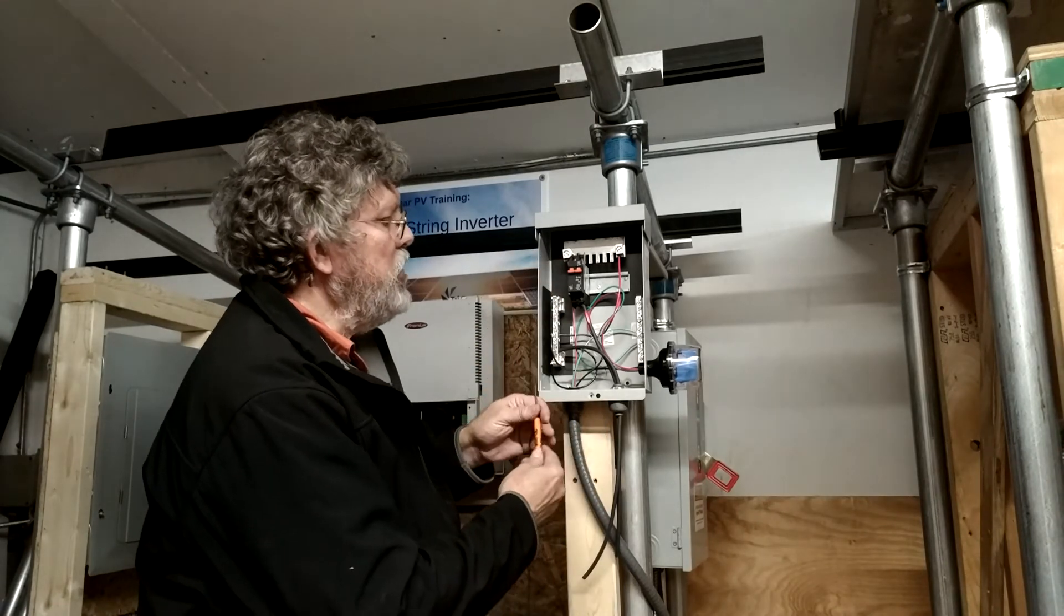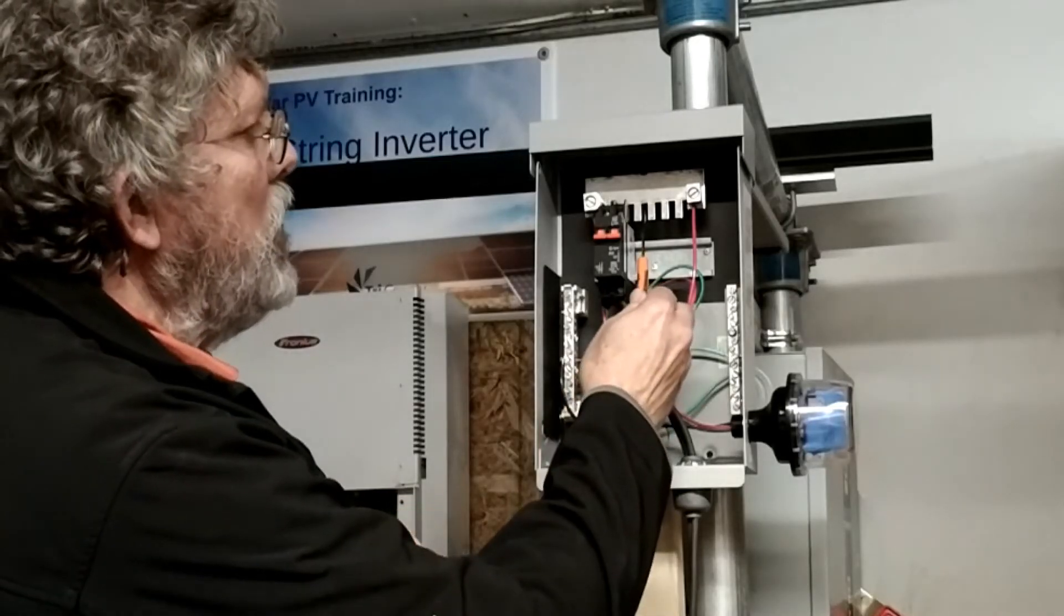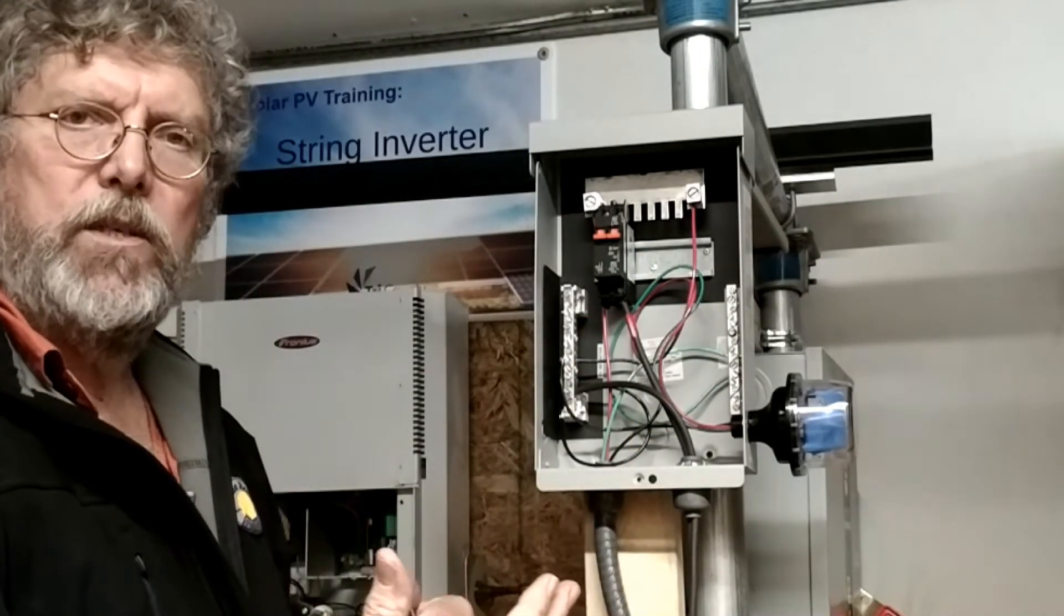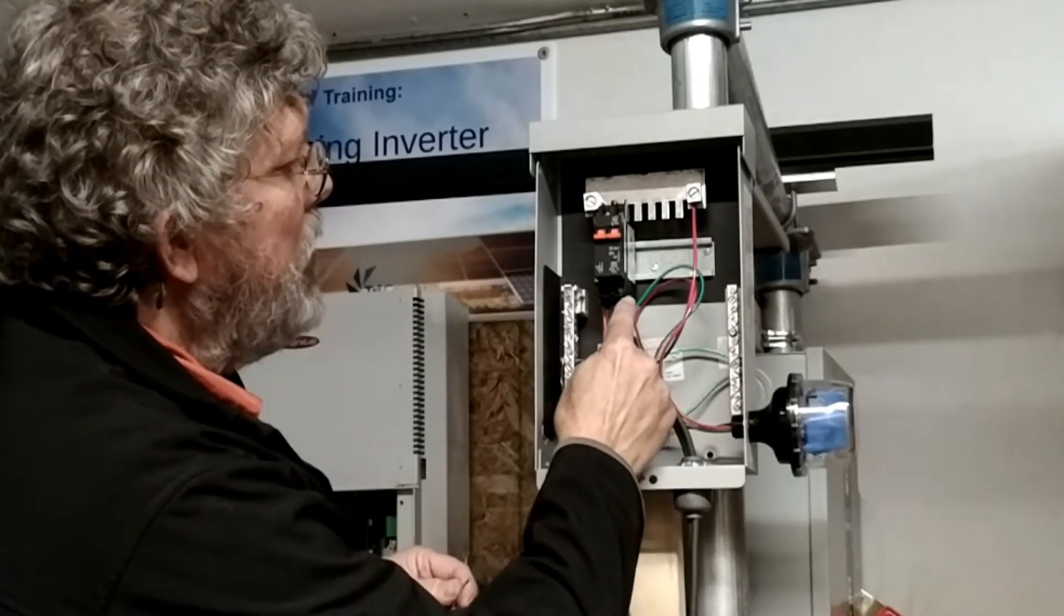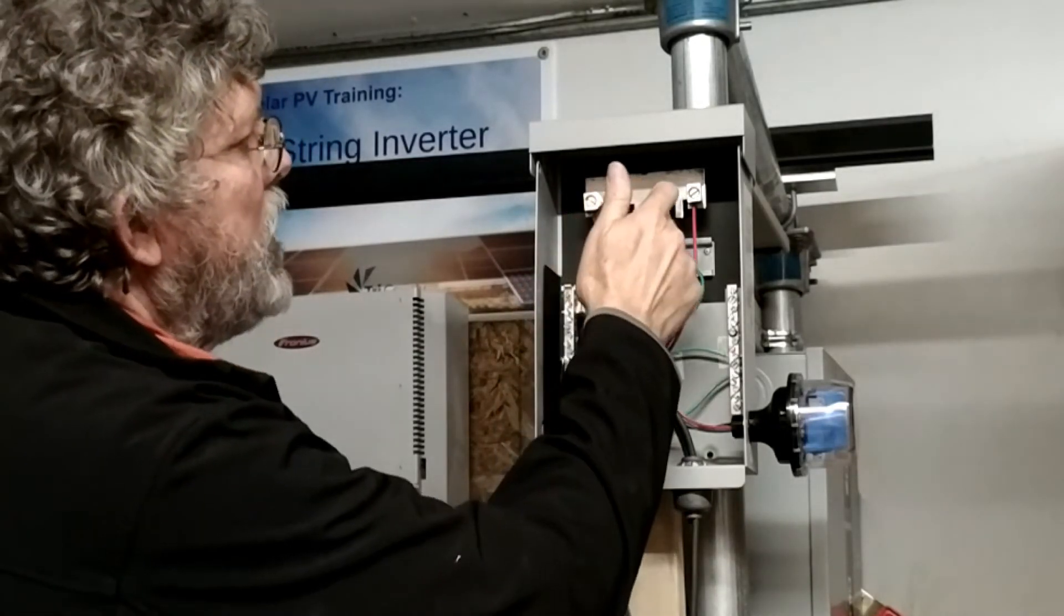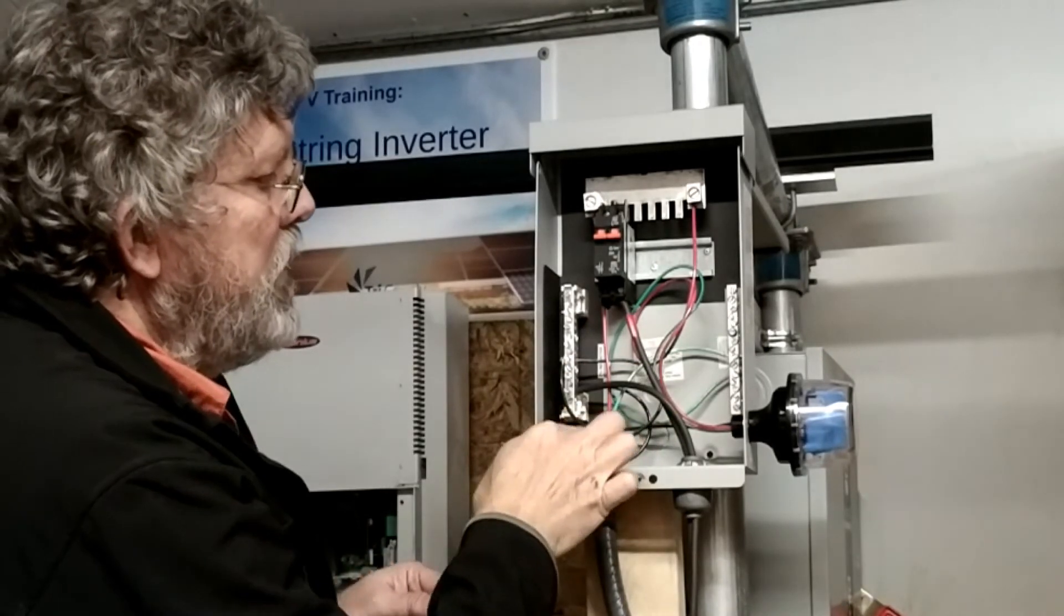So we're in this case only coming in with one string, but if we had multiple strings we could hook into multiple breakers, which is the overcurrent protection that protects each of the strings. Now here I have a positive wire coming in to the bottom. I have a positive wire which would combine all of the breakers into one circuit, which is heading out to the DC disconnect.